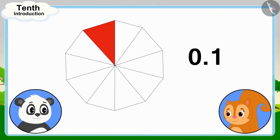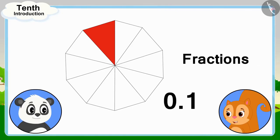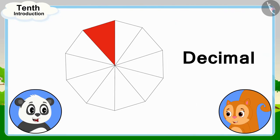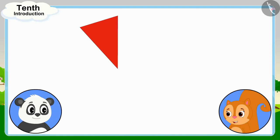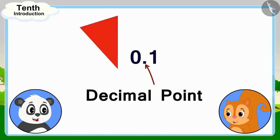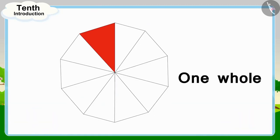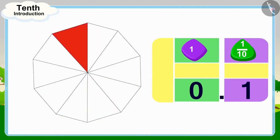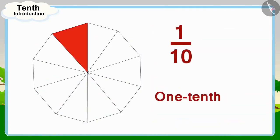Chanda could not understand anything. She said: I know about fractions, but what is this decimal? Golu explained: Decimal means our whole is divided into 10 equal parts, and we are taking one part out of these 10 parts. We write this after the decimal point. And because this fraction is less than one whole, we write the number 0 in the unit's place before the decimal point. In this way, we write one tenth part of your whole flower as 0.1.